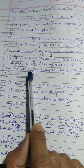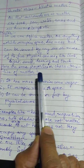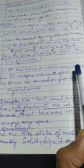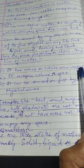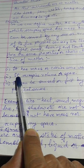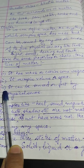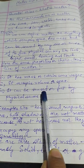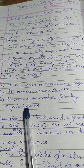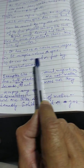Here are some properties or characteristics of matter. It has mass or carries some weight. The second property is it occupies volume or space. And the third property of matter is it can be sensed or felt by our physical senses, as described earlier.